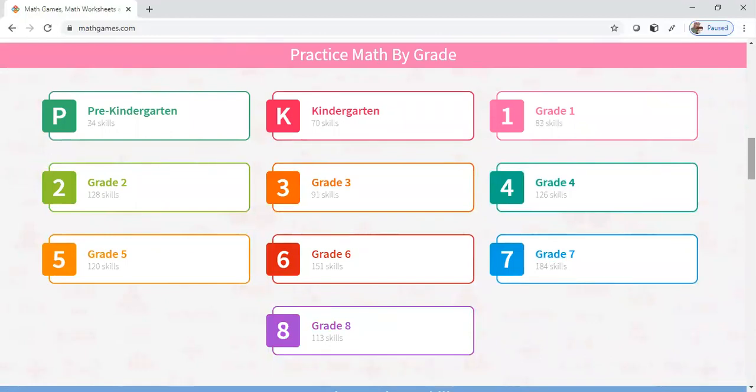You can—it breaks it down by the grade level and it goes all the way from pre-K all the way up to seventh grade. So if you have a student who's in kindergarten but performing on a first grade level, you can give them first grade work. So we're going to click on grade one.